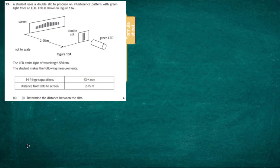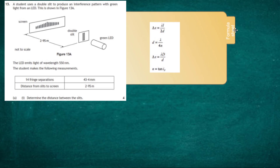We go to our formula sheet and find which equation covers the variables we're looking at — it's going to be that third one down. Delta x is going to be equal to lambda capital D over small d. Delta x is the actual distance between each fringe, small d is the distance between the adjacent slits, lambda is the wavelength, and capital D is the distance between the slits and the screen. That is the equation we're going to use.